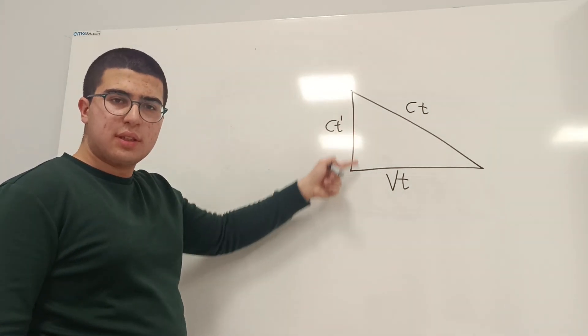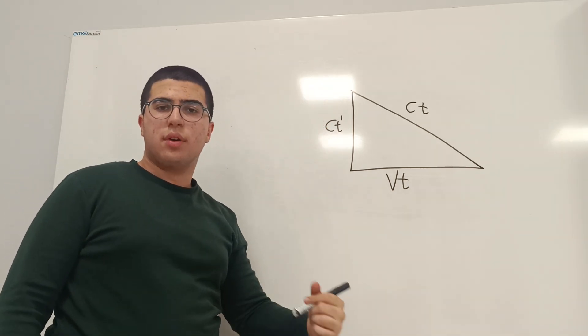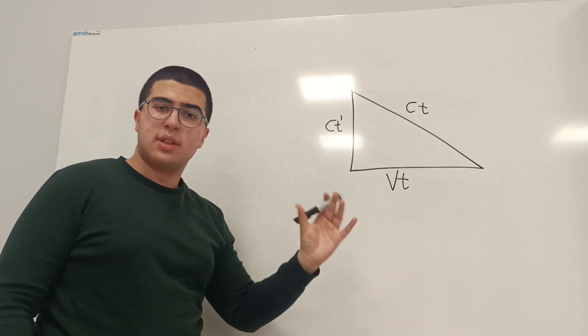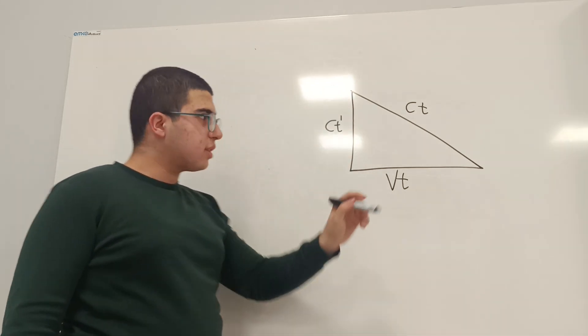So, this distance, c t prime, is the distance that your friend sees the photon moving, because to your friend, who's in the spaceship, this photon clock is inertial, and the photon is going just up and down.